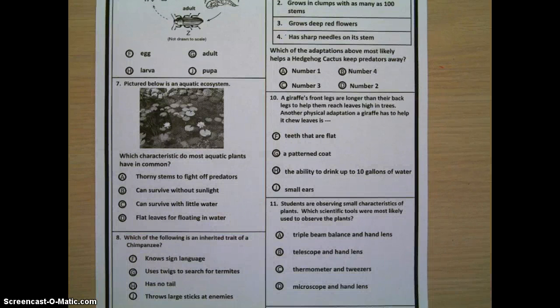Question eleven, students are observing small characteristics of plants. Which scientific tools were most likely used to observe plants? A, triple beam balance and hand lens. B, telescope and hand lens. C, thermometer and tweezers. D, microscope and hand lens.